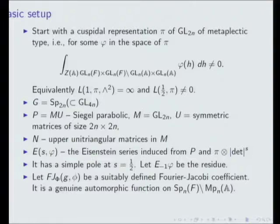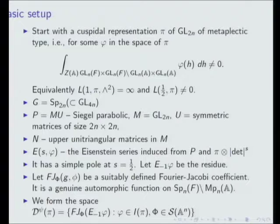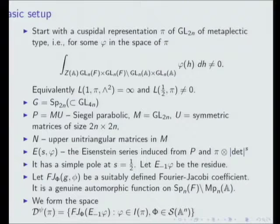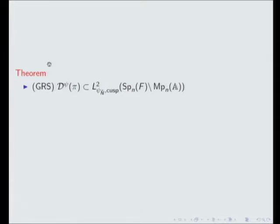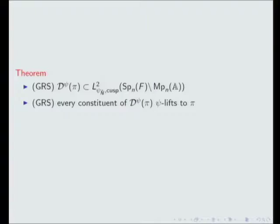This Eisenstein series has a pole exactly because of this condition — in my normalization it's s equals 1/2, and it's a simple pole. There's a residual representation attached to it. Now you take some integral called the Fourier-Jacobi coefficient, which gives you an automorphic form on the metaplectic group. You start with something on Sp_{2N} and you get something on the metaplectic Sp_N-tilde. The descent, by definition, is exactly the space of Fourier-Jacobi coefficients. If you start with something arbitrary, this Fourier-Jacobi would be spread over the whole spectrum. But if you start with a small representation, the miracle is that this representation is going to be irreducible — a generic cuspidal representation. It has the right properties so it lifts to pi in the appropriate way, and it's irreducible.